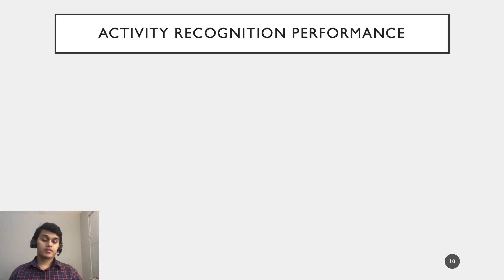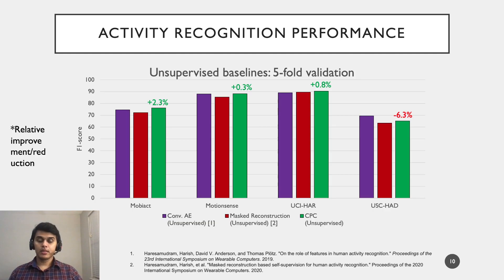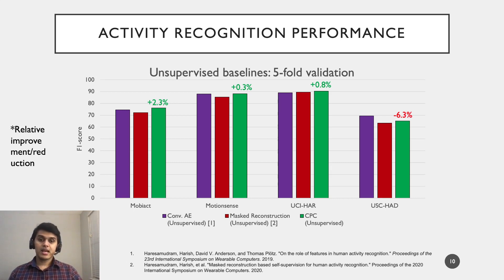Next, we compare the performance of CPC against unsupervised learning baselines in activity recognition, showing only the best performing baselines for clarity. CPC shows an improvement of over 2.3% on MobiAct over the Convolutional Autoencoder. However, for MotionSense and UCI-HAR, we see more modest improvements over the baselines. For USC-HAR, the Convolutional Autoencoder performs considerably better than CPC. Overall, this showcases the effectiveness of CPC as an unsupervised representation learning algorithm, as it outperforms the baselines on three out of four benchmark datasets.